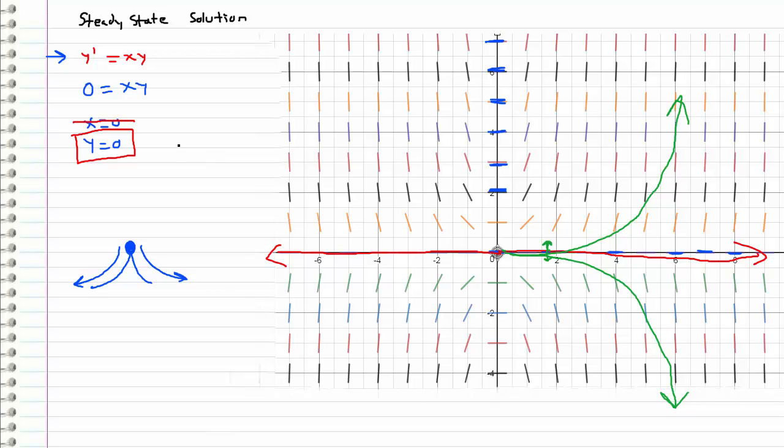So this steady state solution, y equals 0, because of the nature of the slope field and because little deviations cause the solution to diverge to infinity, we characterize this as unstable.